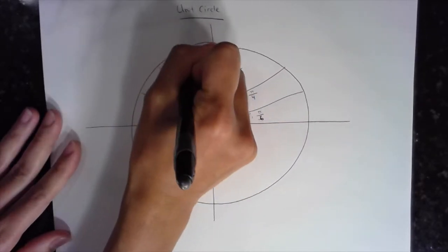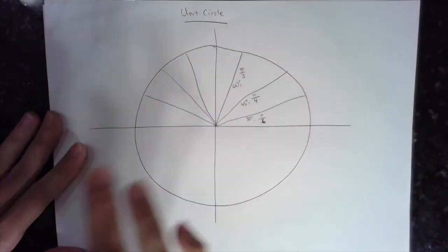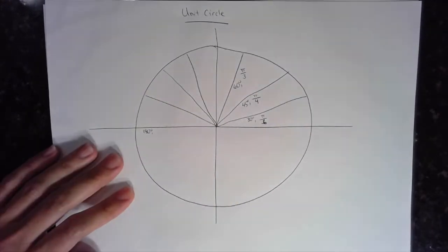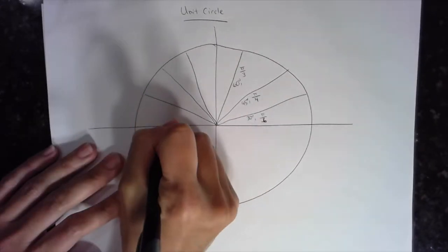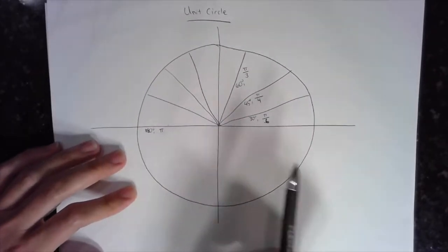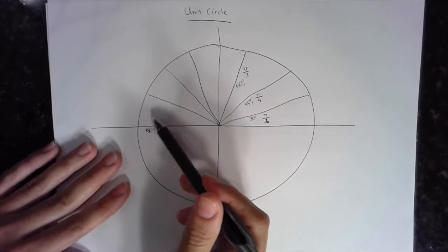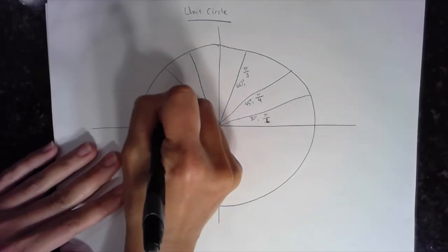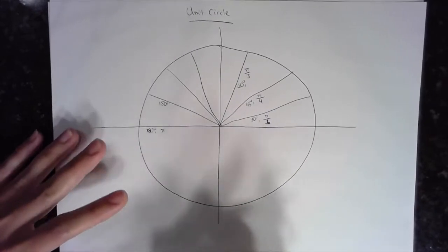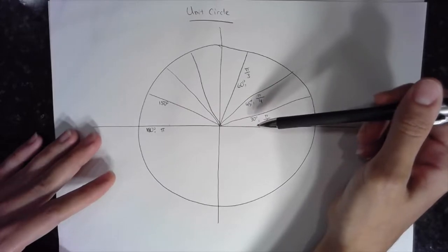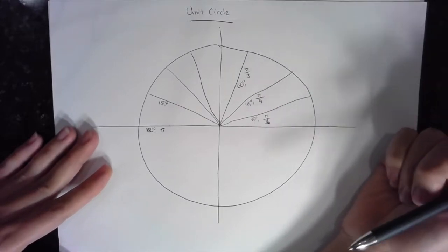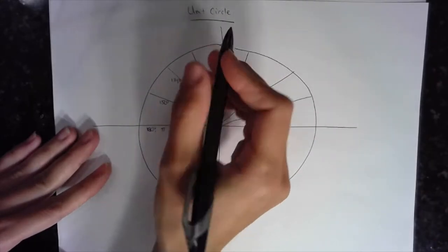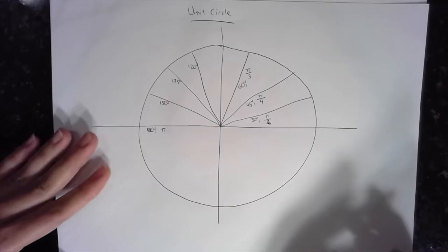Now let's talk about the angles in the second quadrant. The angle at 180° is half of a full revolution, represented in radians by π. Each special angle from the horizontal axis is 30° away, so 180° minus 30° gives 150°. The difference between each of these angles is 15°, so the next ones are 135° and 120°.